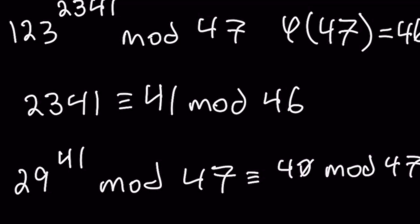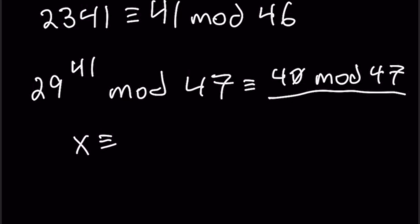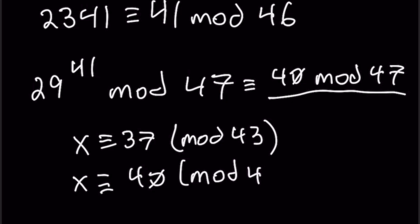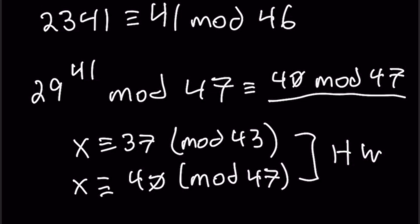Now you may be asking how solving these two parts separately helped us. We have 123^2341 ≡ 37 (mod 43) and 123^2341 ≡ 40 (mod 47). That gives a system of modular congruences solvable by the Chinese Remainder Theorem, which was covered in a previous example video. I'll leave solving that system as homework.